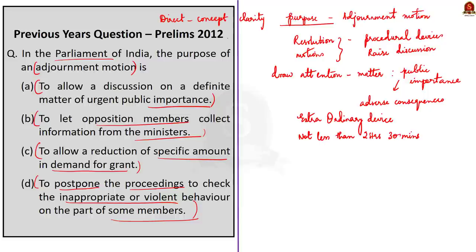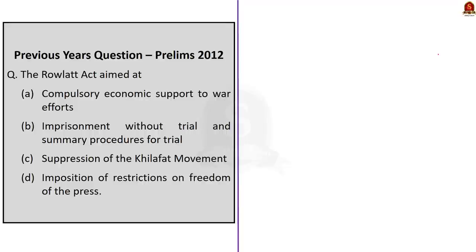Based on this understanding, we can easily conclude that option A is the right answer, because the purpose of an adjournment motion is to allow a discussion on a definite matter of urgent public importance. So statement A is correct.